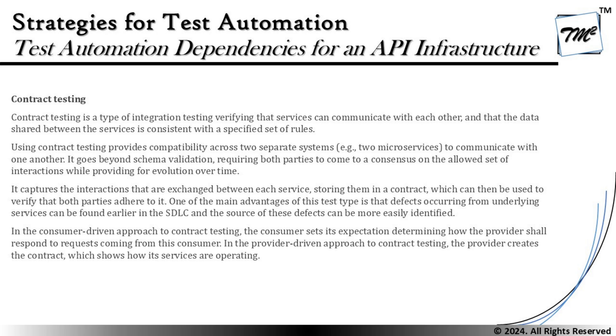One of the main advantages of this test type is that defects occurring from underlying services can be found earlier in the SDLC, and the source of those defects can be more easily identified. By performing contract testing we can include identifications into the contract as well. For example, if for certain requests the response is not coming back appropriately, we may amend the contract after testing to define the bare minimum needed to get the system working correctly.